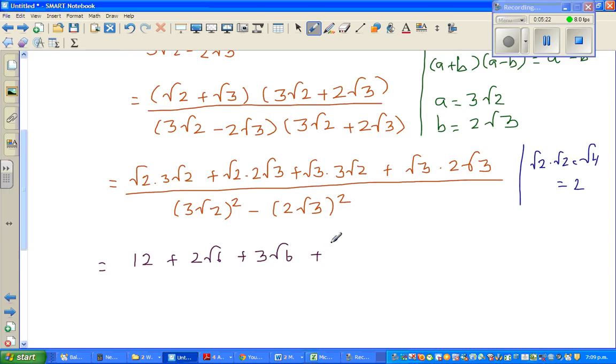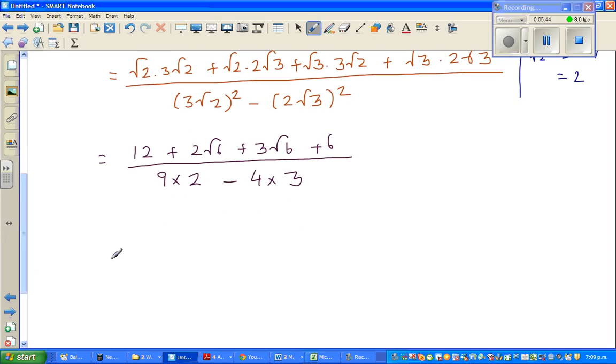However, here you have to square both of them. So this is 3 squared is 9 times root 2 squared is root 2 times root 2, which is 2 minus. This is 2 squared, which is 4 times root 3 times root 3 is 3.